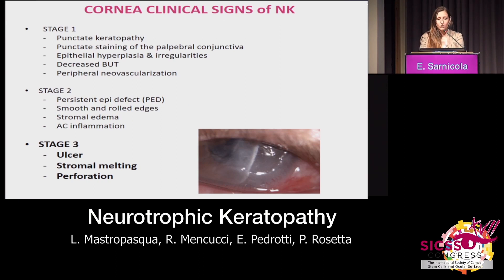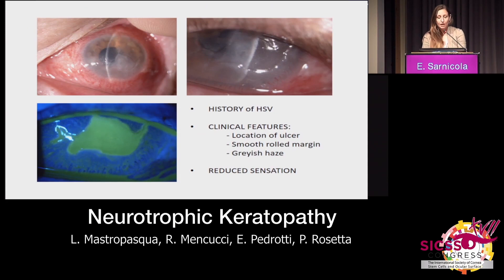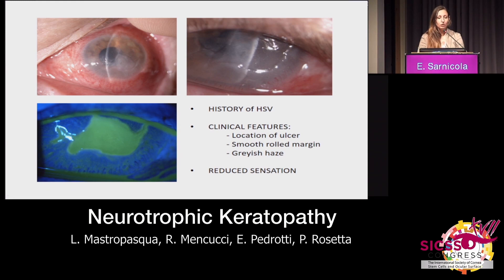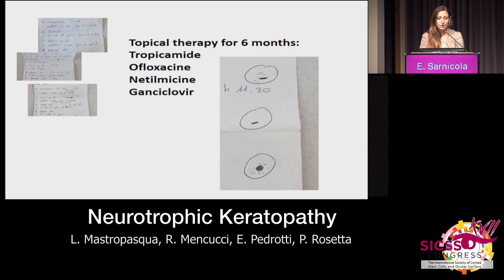Stage three: we have the ulcer, stromal melting, and/or perforation. This case is an elderly patient, 80 years old. She suffered from an EBV infection previously, and we know she has corneal anesthesia. Only on the basis of the pictures, we should recognize a neurotrophic ulcer, because all ulcers in these cases are central — and this is central. If you observe the margins, you see that they are quite thick, blunt, and rolled up. This is a typical and pathognomonic trait of these ulcers. The whitish and grayish appearance of the ulcer fundus is also typical.